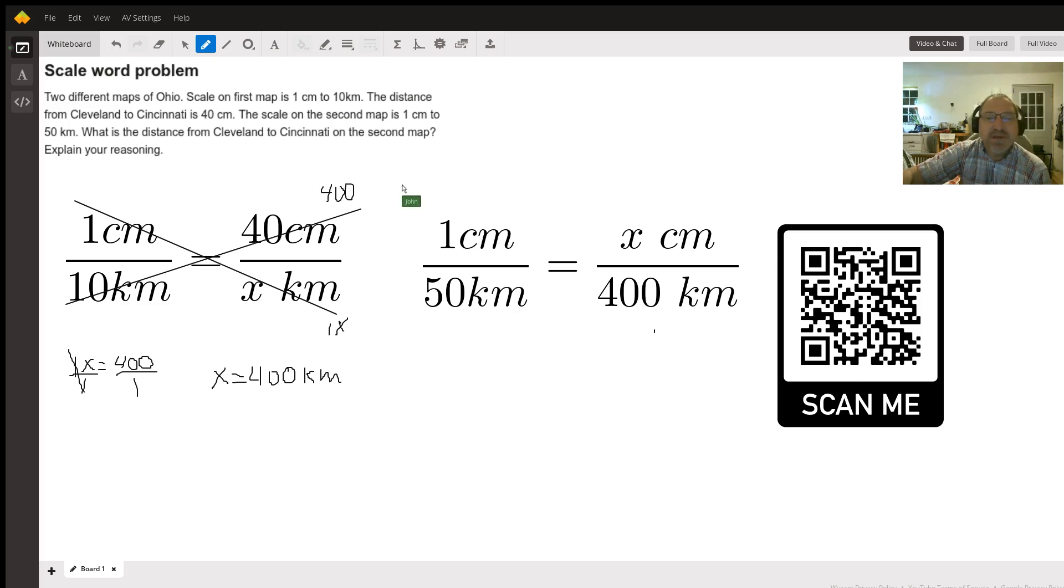Now we're going to do the same thing—cross-multiply, set them equal to each other, and then simplify. Let me grab my pen. So 1 times 400 is 400, and 50 times x is 50x.